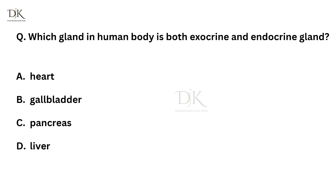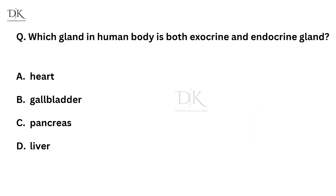Which gland in the human body is both exocrine and endocrine gland? Right answer is pancreas.